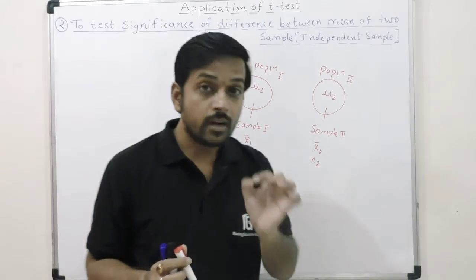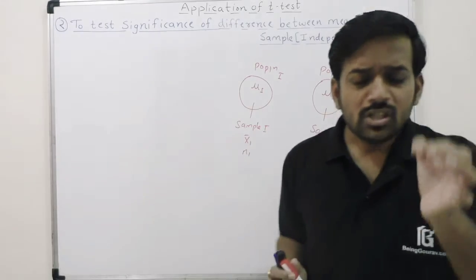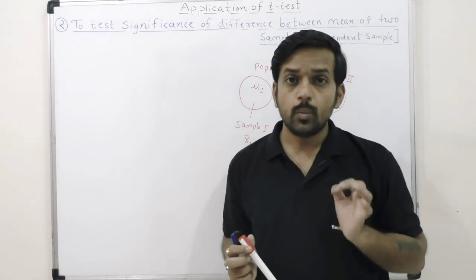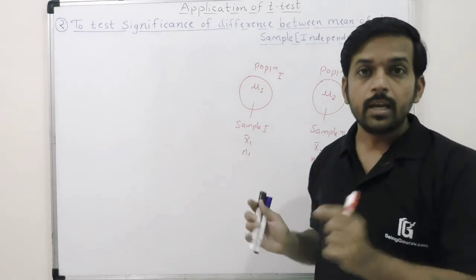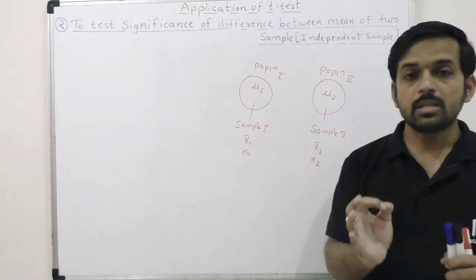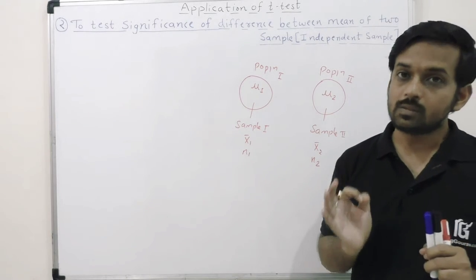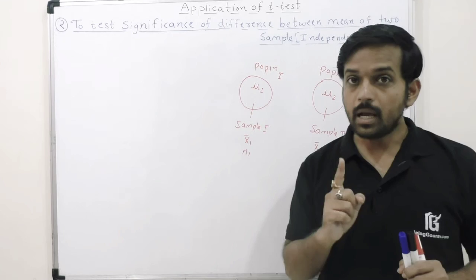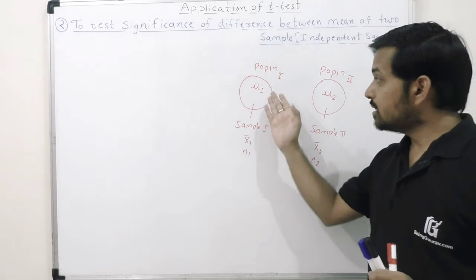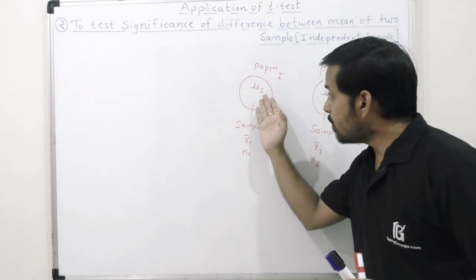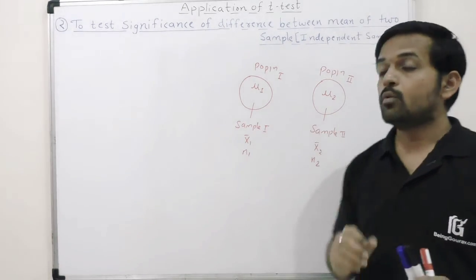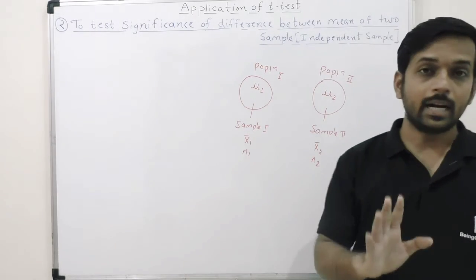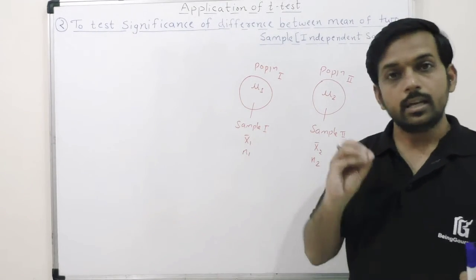The assumptions we studied for the t-test in video number one are applicable here too. The most important assumption is that the sample size should be small — small for both samples. The population from which we select the sample should be normally distributed, and the sample should be random.